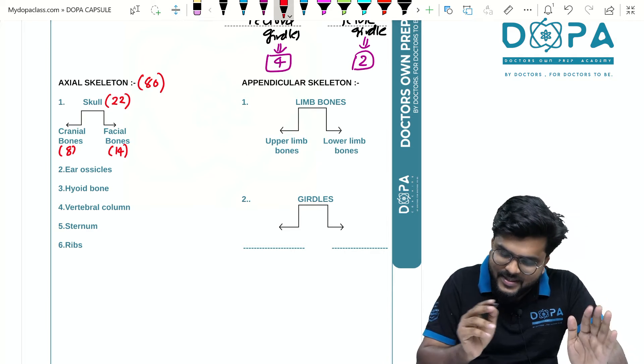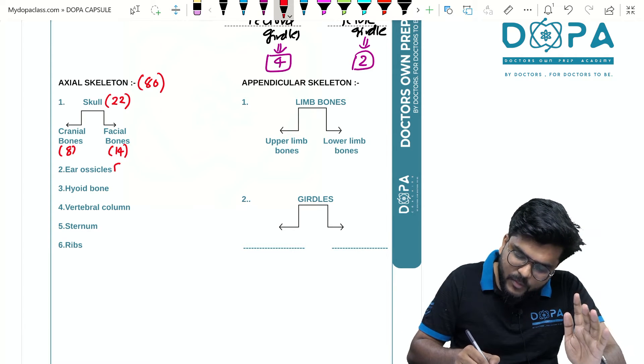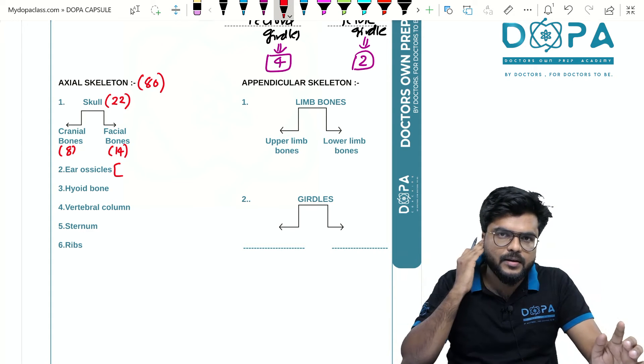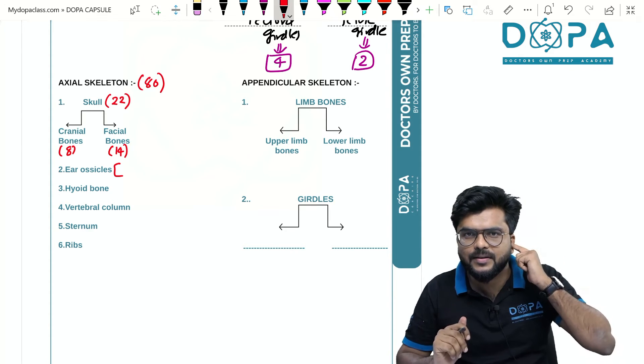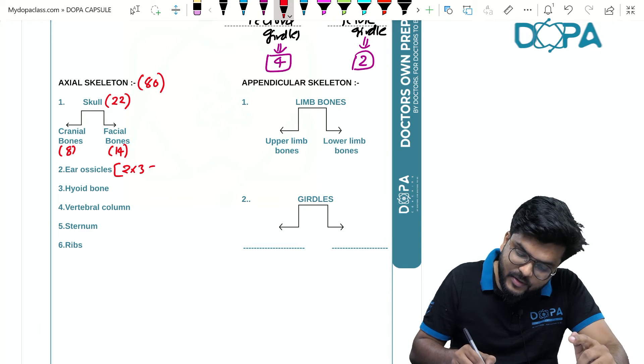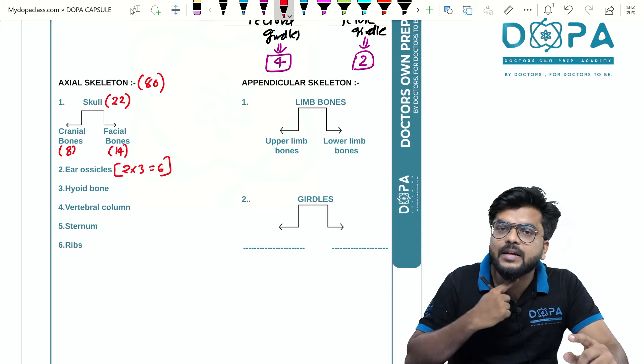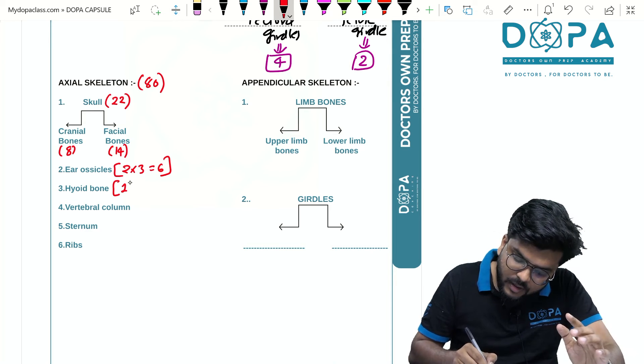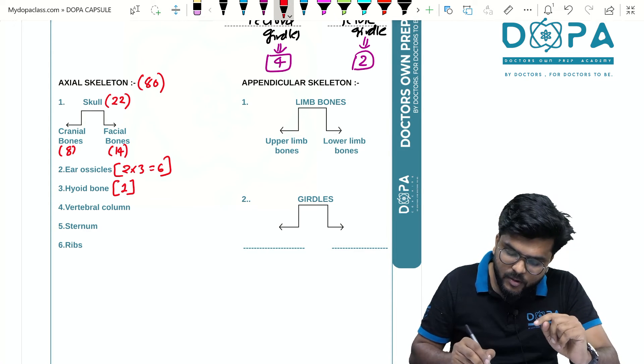For ear ossicles, totally there is 2 into 3: malleus, incus, and stapes. So totally 3 into 2 or 2 into 3 equals 6 bones. And there is a single hyoid bone. One hyoid is present.